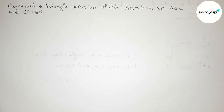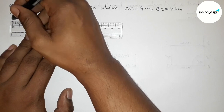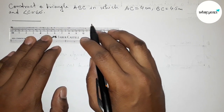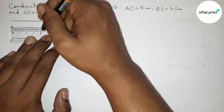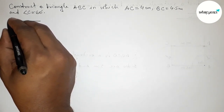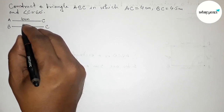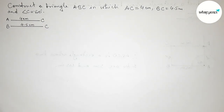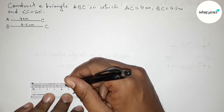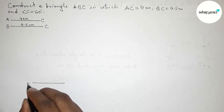First of all, let us draw the two given sides. Drawing a 4 centimeter line segment starting from zero — this is AC equals 4 centimeter. Next, drawing a 4.5 centimeter line segment — this is BC equals 4.5 centimeter. Now again drawing BC equals 4.5 centimeter starting from zero, marking points B and C.